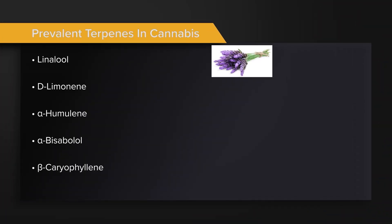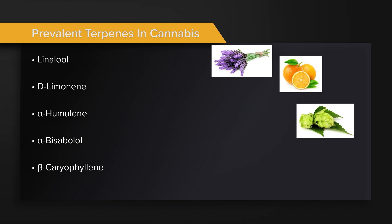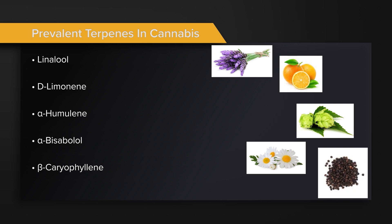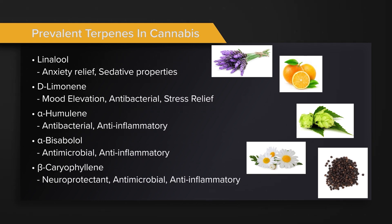Some of the more prevalent terpenes seen in cannabis are also present in everyday common plants and foods: linalool from lavender, limonene in citrus peels like orange, humulene prevalent in hops, bisabolol in chamomile, and caryophyllene prevalent in black pepper. They are all known to have individualized therapeutic properties, whether stress relief, anxiety relief, anti-inflammatory, or antimicrobial properties.